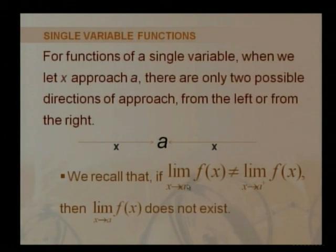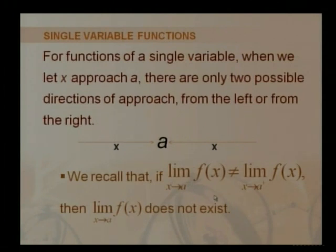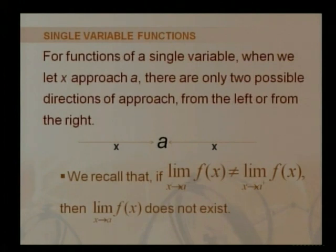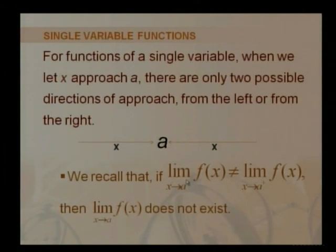When x approaches a from the right side, we say the limit of f(x) when x tends to a plus. If the value of f(x) from the left approach and from the right approach are different, then the limit does not exist. We saw an example where f(x,y) approached a fixed value while g(x,y) was not approaching a single fixed value — sometimes zero, sometimes minus one, sometimes one.